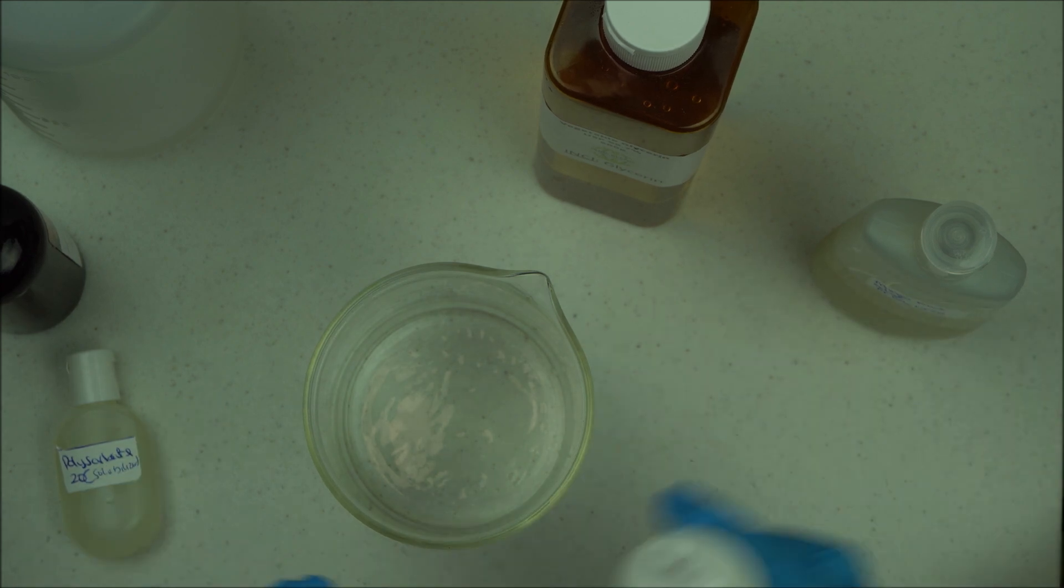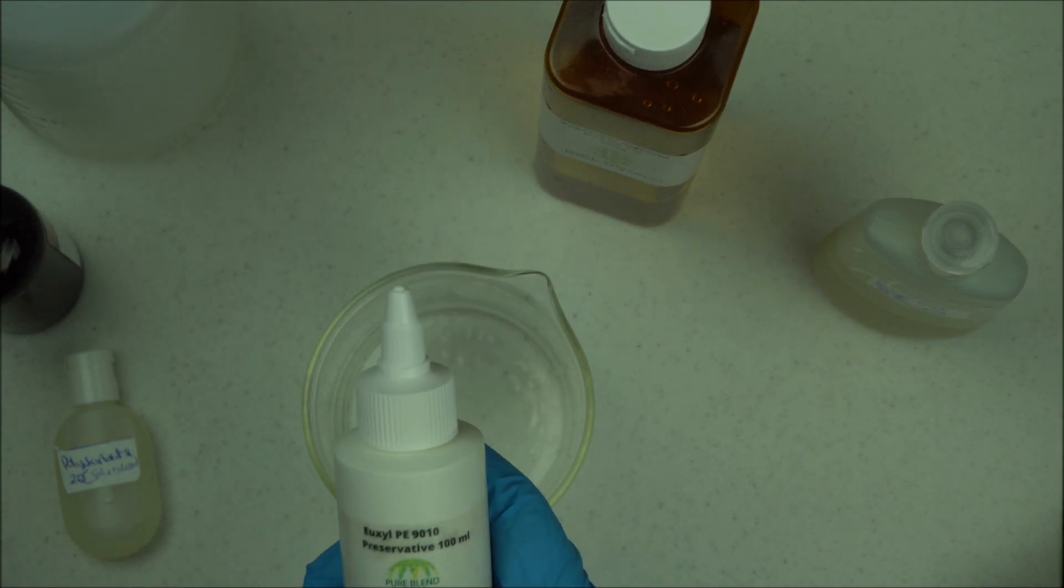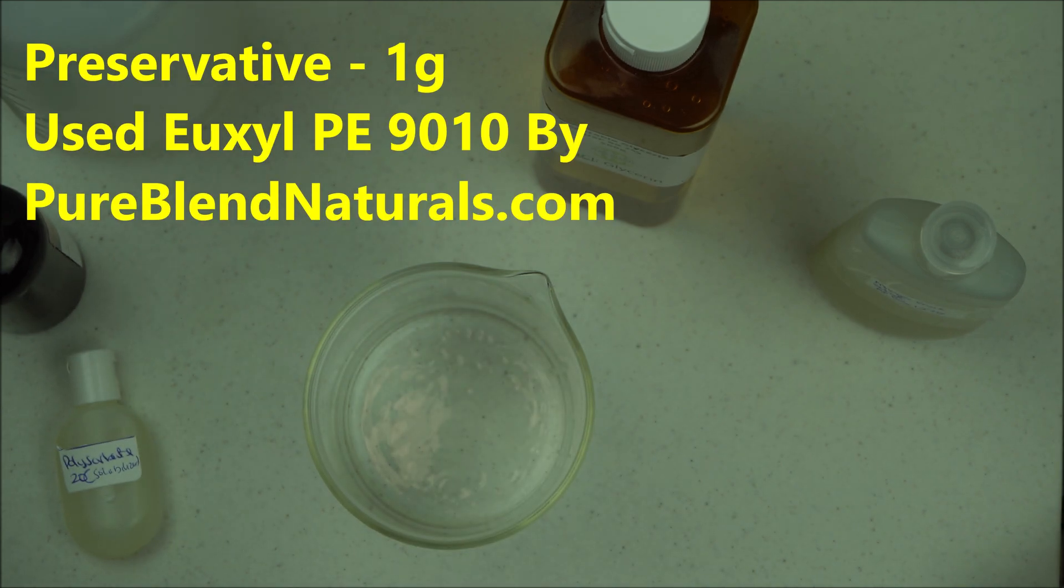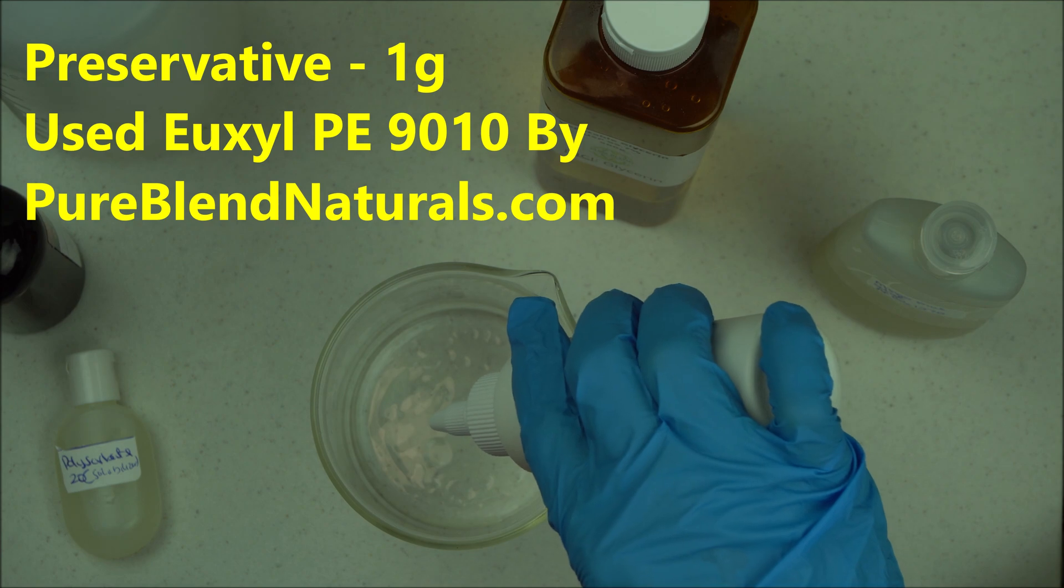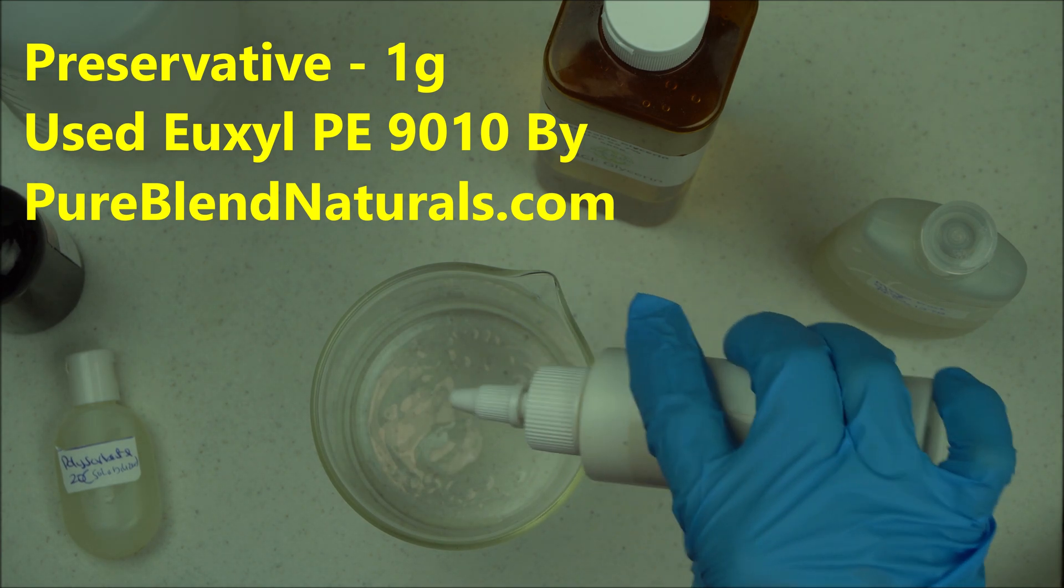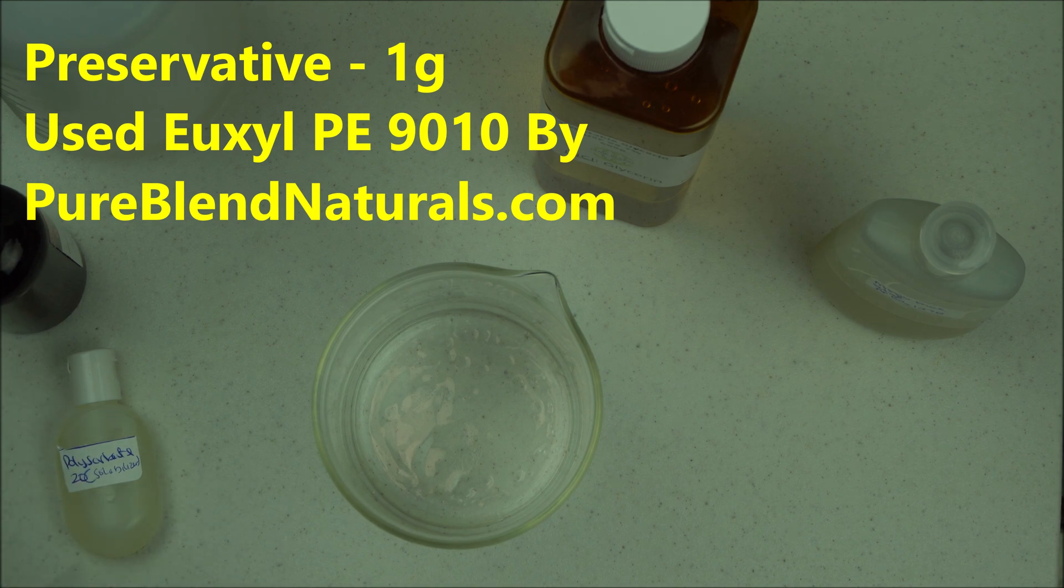Now we're going to add our preservative. We're using Auxilpe 9010 by Pure Blend Naturals. Add one gram of preservative to that and mix it well.